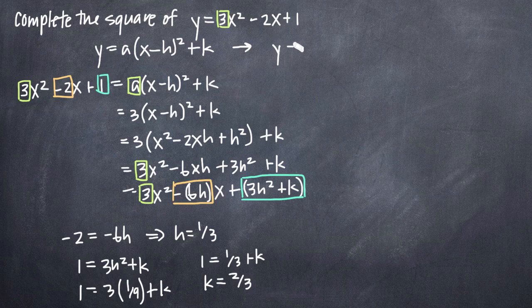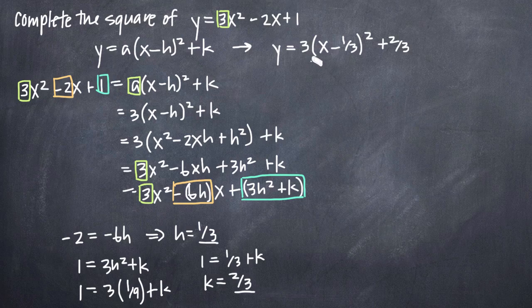So, we can say y is equal to, we already know that a is equal to 3, so we can go ahead and plug in 3. We have x minus our value for h, which we saw was 1 third. So, we get minus 1 third squared plus the value we got for k, which we know to be 2 thirds, so plus 2 thirds. And that's it. This is the new form of our equation now that we've completed the square.